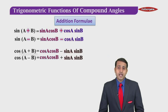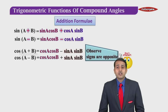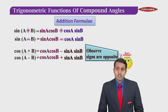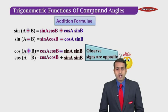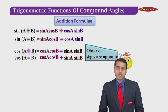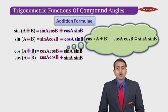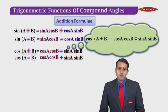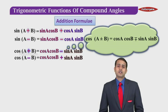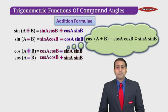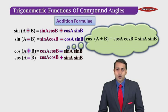Now let us observe the signs. If you observe, the signs are opposite: if there is a plus on the left, there is a minus on the right, and if there is a minus on the left, there is a plus on the right. We can summarize these two formulas as: cos of A plus-or-minus B is equal to cos A cos B minus-or-plus sine A sine B.